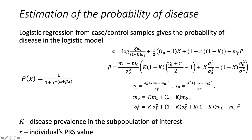K is disease prevalence in the population or sub-population of interest, because in neurodegenerative disorders the older you are, the higher the prevalence in all sub-populations. Sigma 0 and sigma 1 are the standard deviations of the polygenic risk scores in controls and cases respectively. M1 and M0 are the means of polygenic risk score distributions in cases and controls. R0 and R1 can all be expressed in terms of K — population prevalence in the subset of interest — M0 and M1 means of the PRS distribution, and sigma 1 and sigma 0 standard deviations of those distributions.